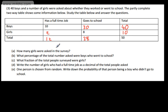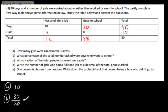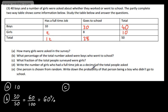In part B, how many girls were asked in the survey? Girls were 10, so there were 10 girls asked. What percentage of the total number asked were boys who went to school? 30 boys out of 50 went to school. Writing this as an equivalent fraction out of 100 gives 60 out of 100, which is 60%. In part C, what fraction of the total people surveyed were girls? That's 10 out of 50, and simplified that's 1 out of 5.